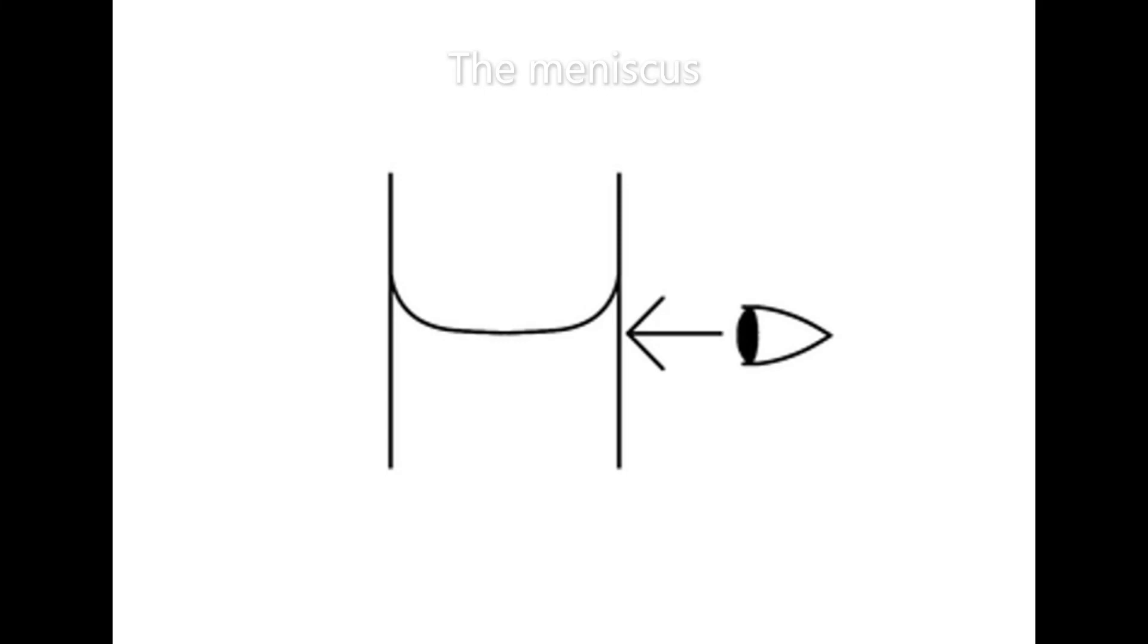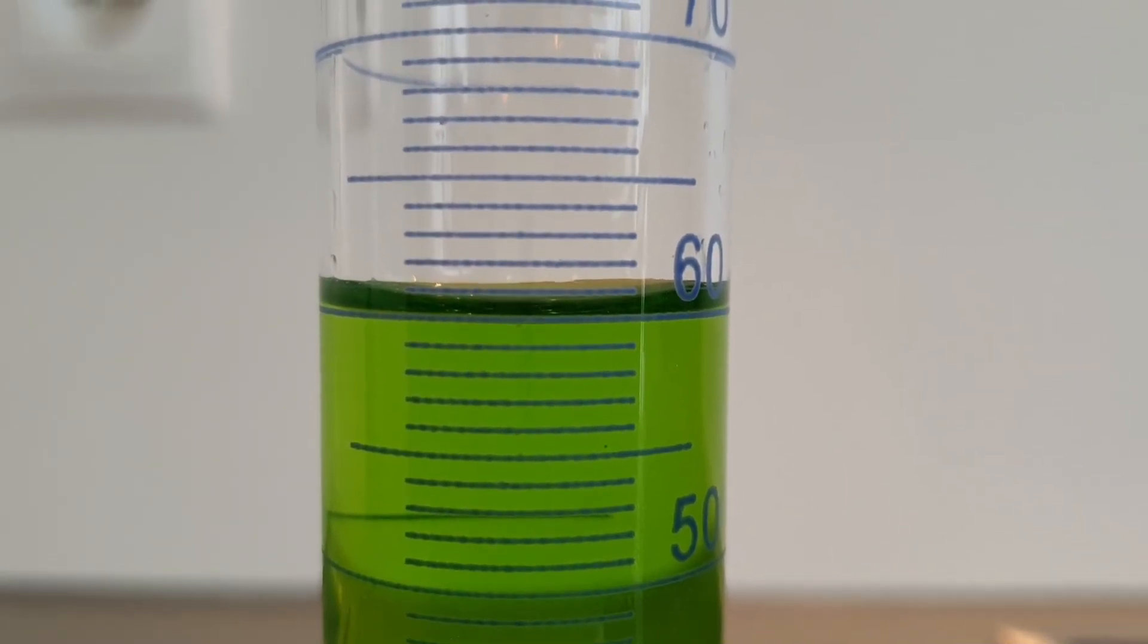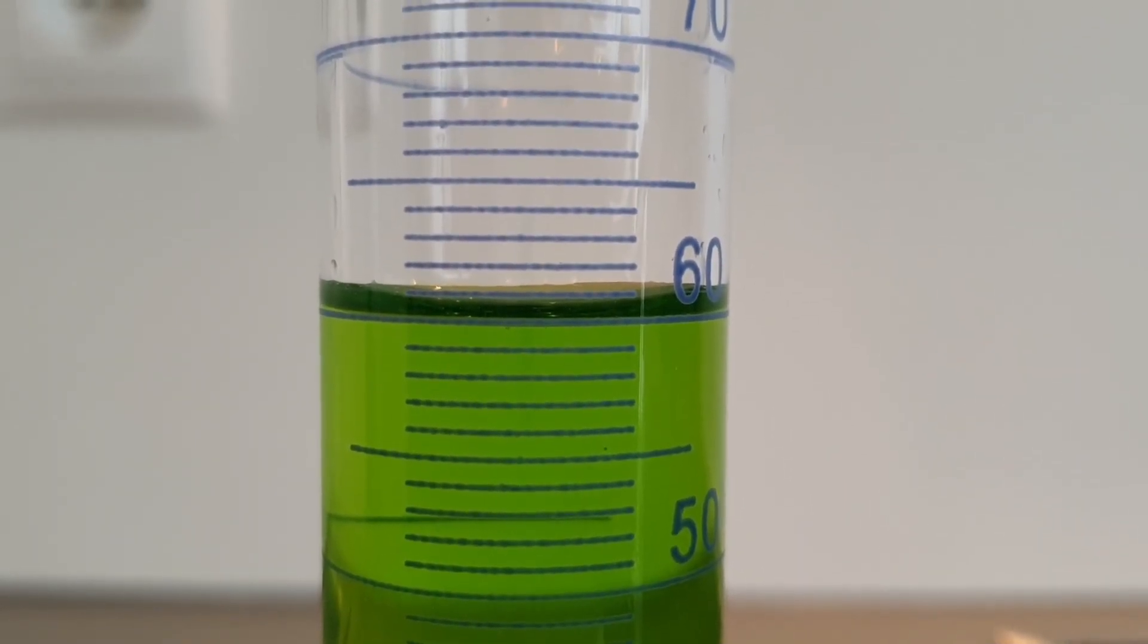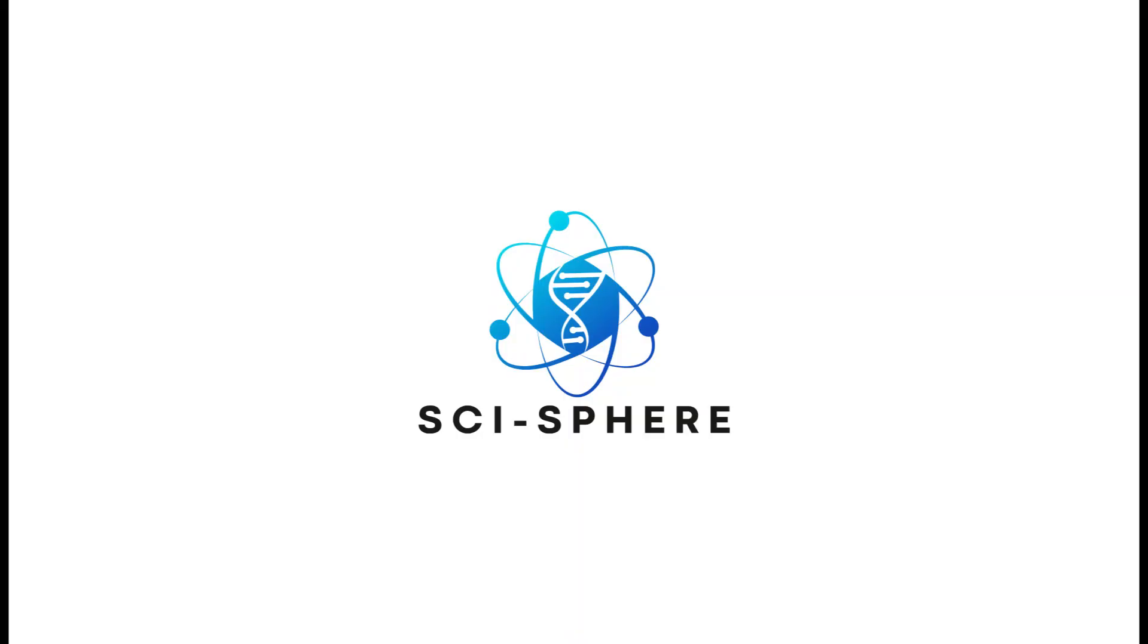This curve is what we call the meniscus, and there you have it, right on the meniscus line for 60 milliliters.